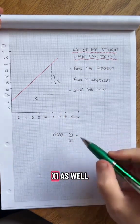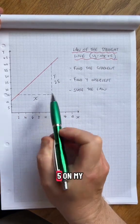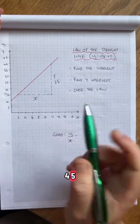And then we want the x one as well, so I'm going to go one, two, three, four, five. On my scale, one, two, three, four, five. That's 10.